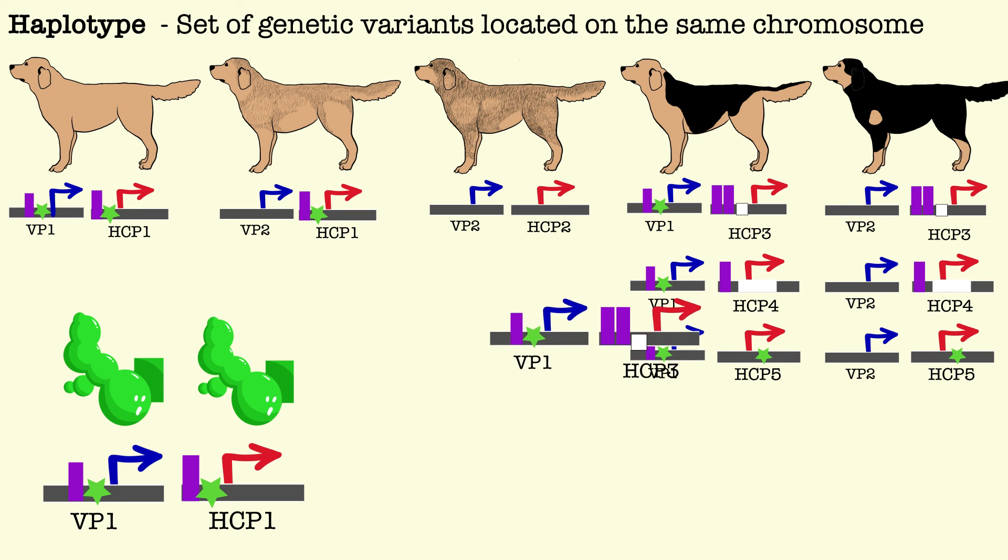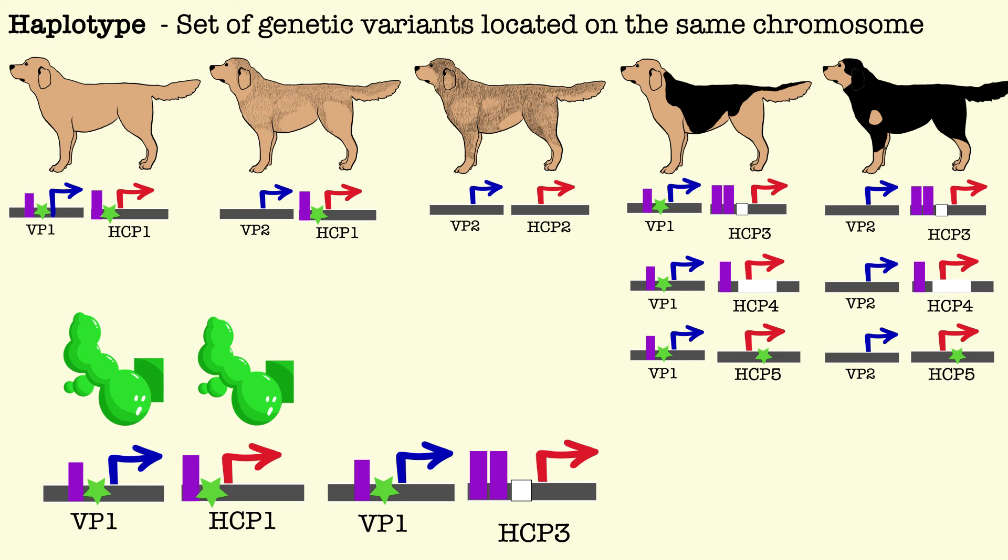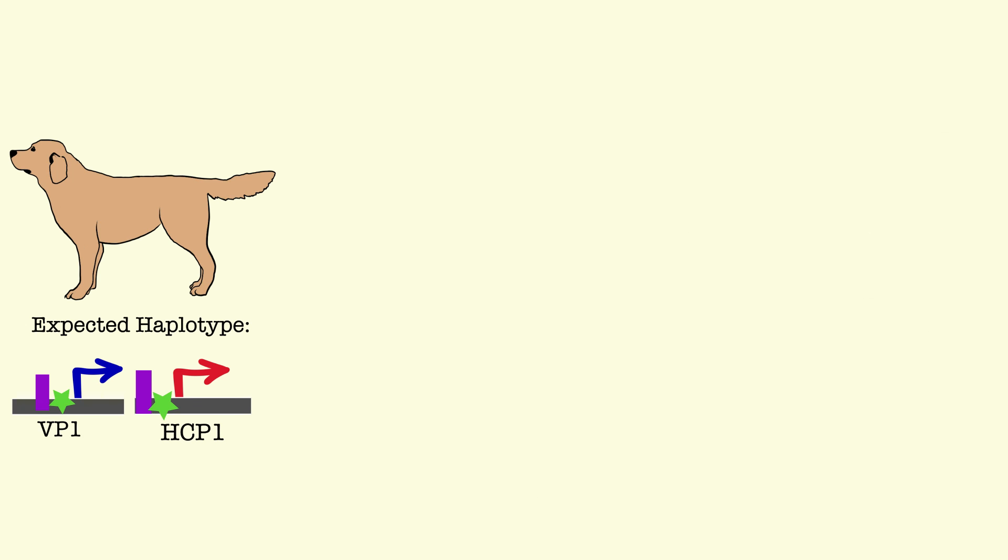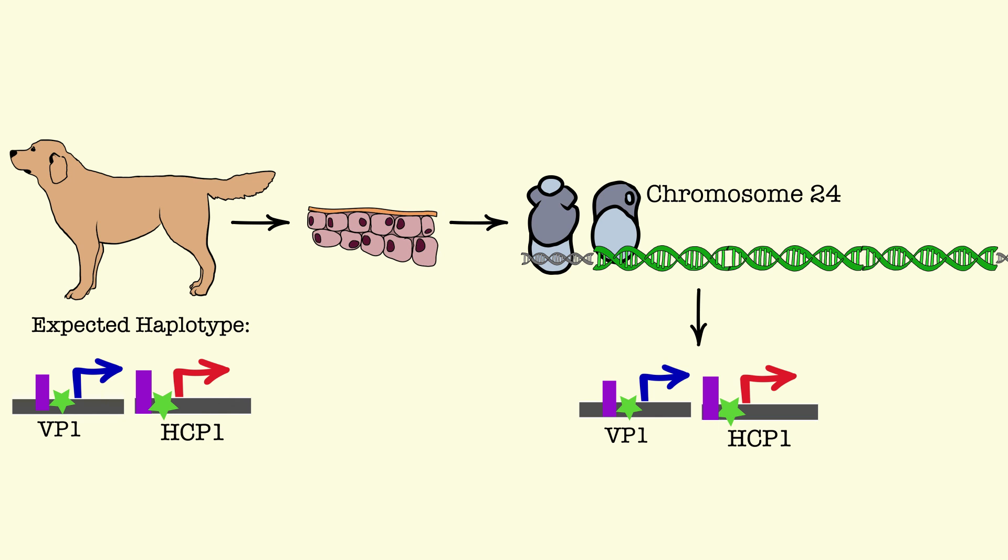While a dog with a haplotype consisting of ventral promoter 1 and hair cycle promoter 3, which induces no ASIP expression, would be expected to have a black saddle pattern. To test these new predictive haplotypes, they took skin samples from 366 dogs, sequenced the haplotype, and recorded whether it matched what they expected based on the observed coat pattern.